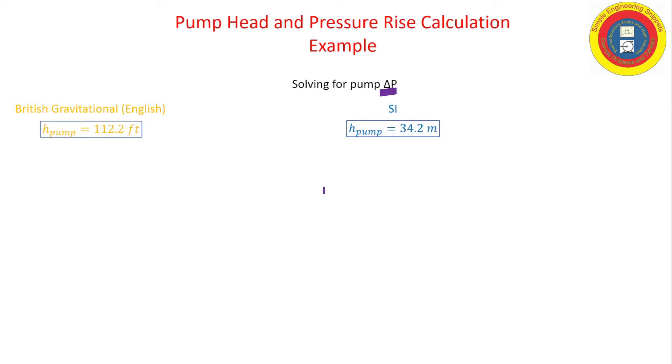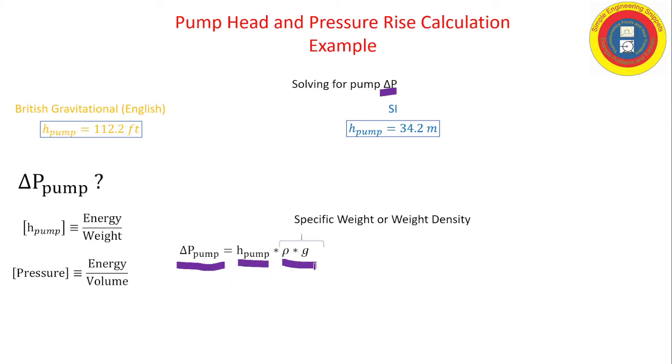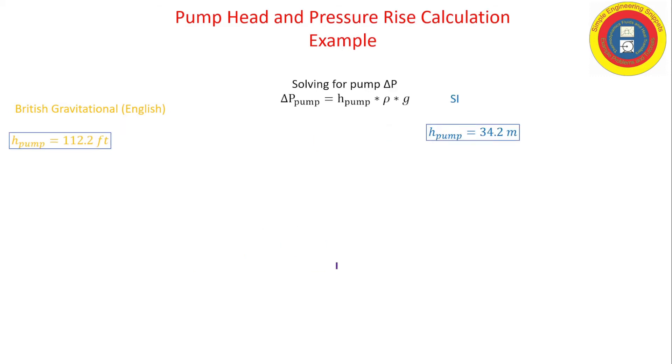Now let's work on finding the pressure rise across the pump. And again, let's look at the definition or the dimensions of our terms. Head is energy per weight, pressure is energy per volume. So to obtain pressure rise, I just take the pump head and multiply it by the weight density, also sometimes called the specific weight. All right, so let's do that for both systems of units.